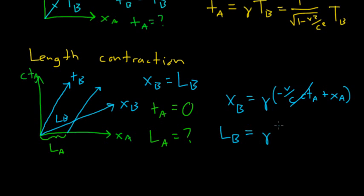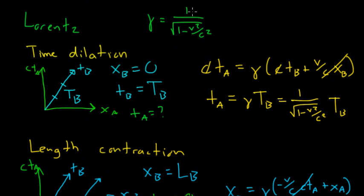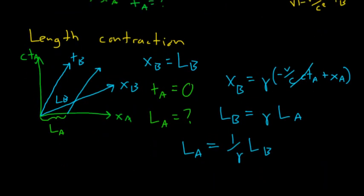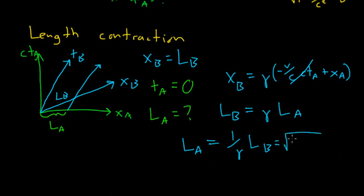We're going to get xB equals gamma minus v over c times ctA plus xA. So xB is just going to be equal to LB, time A is going to equal zero so this whole term goes away, and we're going to get gamma LA because xA is equal to LA. If we rearrange this we're going to get LA, the length between these two observers as measured by A, is going to equal one over gamma times LB. If gamma is this one over square root of one minus v squared over c squared, then one over gamma is just going to give us square root of one minus v squared over c squared times LB. We notice that if LB measures this as one meter then this is going to make that length shrink if A measures it.